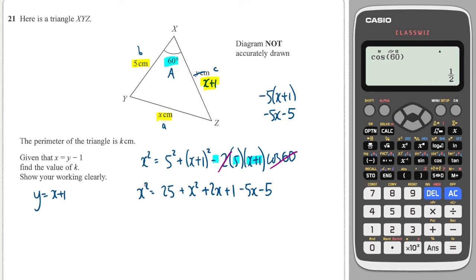I've got an x squared on both sides of the equation so I can cancel those out. So I'm going to get 0 is equal to 25 plus 1 minus 5 is 21. And I've got a 2x minus a 5x which is a minus 3x. So therefore 3x equals 21, x equals 7.